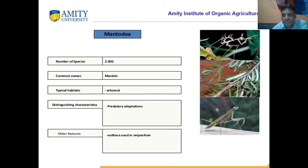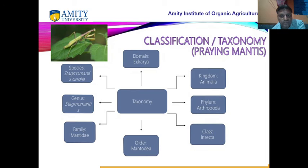Now Mantodea — this is mantis. You can see the praying mantis. The four wings are special; the four legs are special. They can catch their enemy with the help of four legs. 2,300 species have been identified. They are predators — they catch other smaller insects. Classification: Eukaryotes means they have a nucleus, so they are called eukaryotes. Animalia means they belong to the animals.